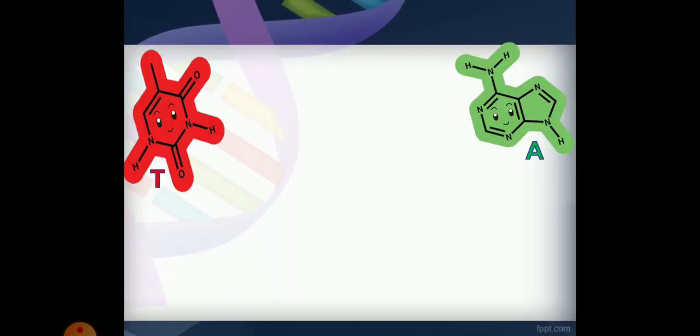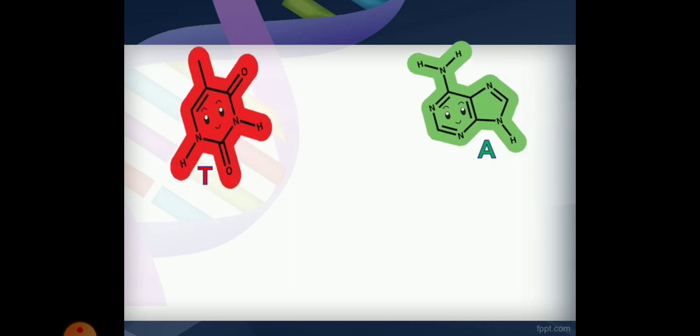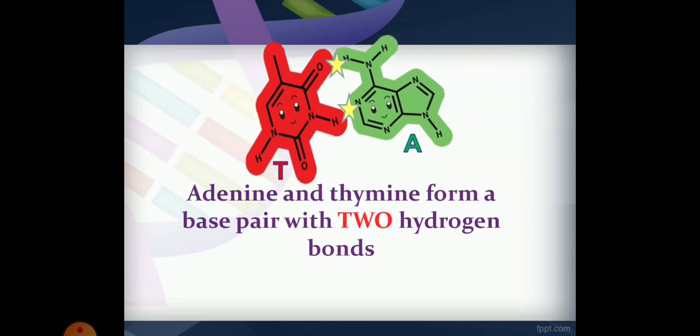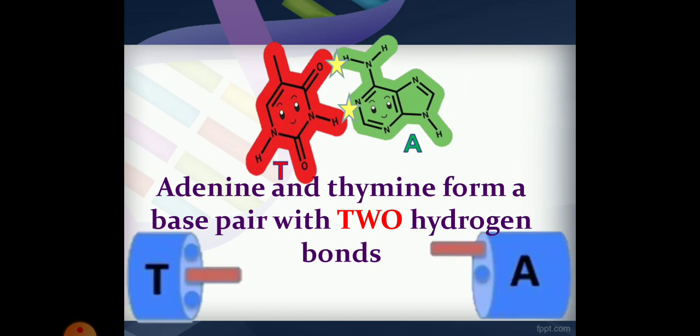Bases are connected by hydrogen bonds. Adenine always pairs with thymine, forming two hydrogen bonds. This is called a base pair.